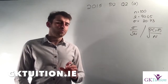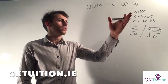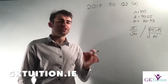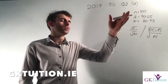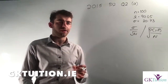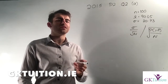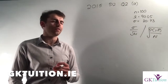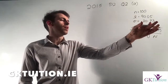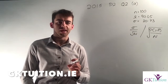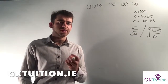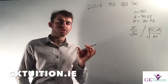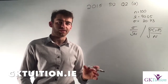In the first part of this question we're told that a survey of 100 shoppers has taken place. These shoppers all went to the supermarket on Saturday, and the mean amount spent by these shoppers was €90.45, and the standard deviation was €20.73. We're asked to find a 95% confidence interval for the average amount spent in the supermarket that Saturday.